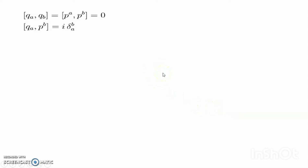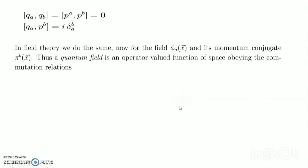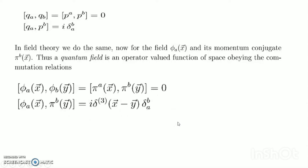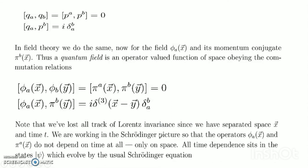In field theory we do the same, now for the field phi_a(x) and its conjugate momentum pi^{ab}(x). A quantum field is an operator-valued function of space obeying equal-time commutation relations. Note that we have lost all track of Lorentz invariance since we have separated space x-bar and time t. We are working in the Schrödinger picture, where the operators phi_a(x) and pi^a(x) do not depend on time, only on space. All time dependence sits in the states |psi>, which evolve by the usual Schrödinger equation: i d|psi>/dt equals H|psi>.